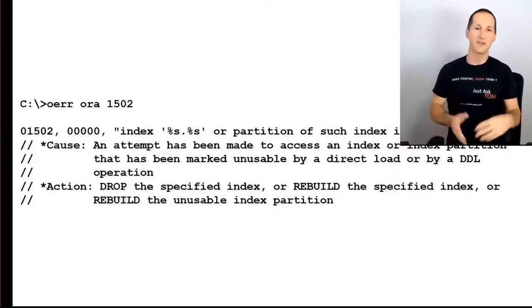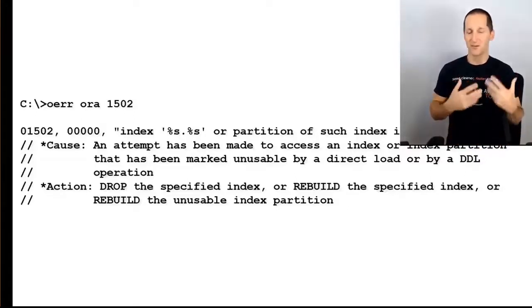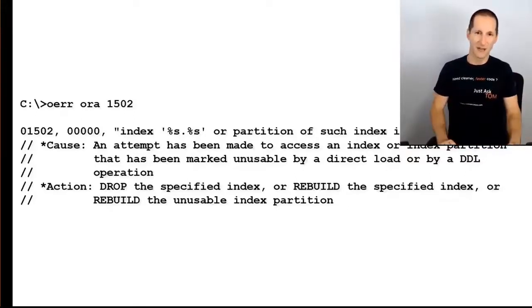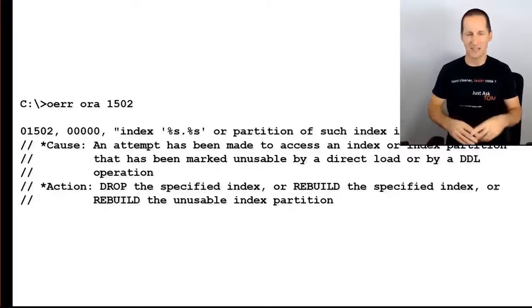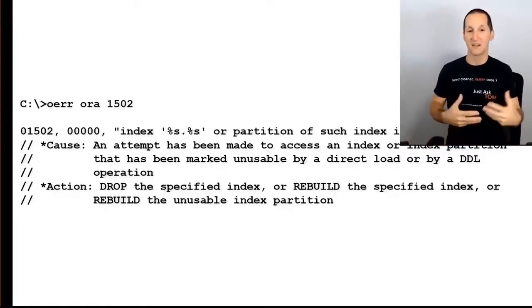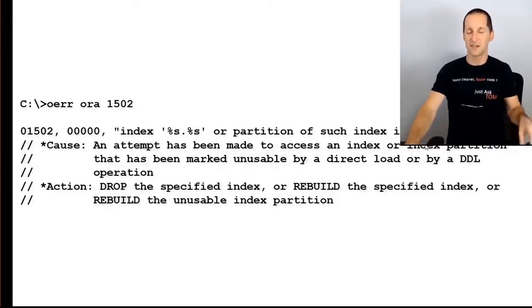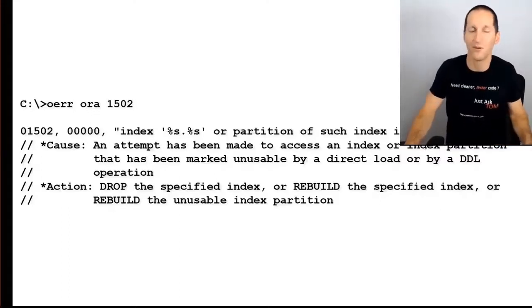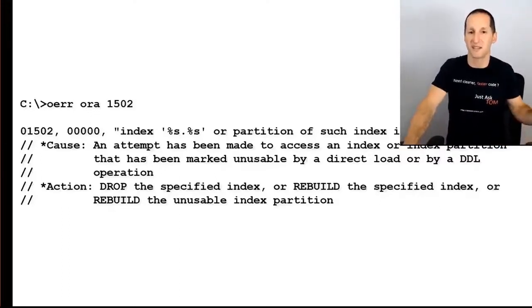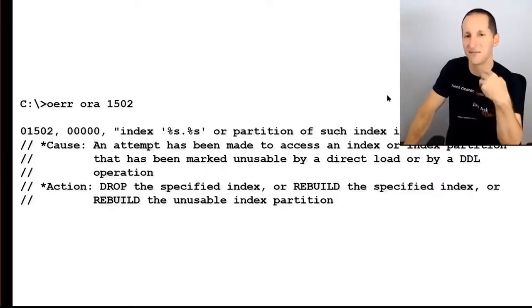The error we used to get back in Oracle 9 was: you do some sort of table-level operation — you move a table, drop a partition, etc. — and the index becomes marked unusable. You get told you have to rebuild the index. In Oracle 10 we introduced a parameter called skip_unusable_indexes. That parameter existed before Oracle 10, but it always used to be set to false. In Oracle 10 we defaulted it to true.